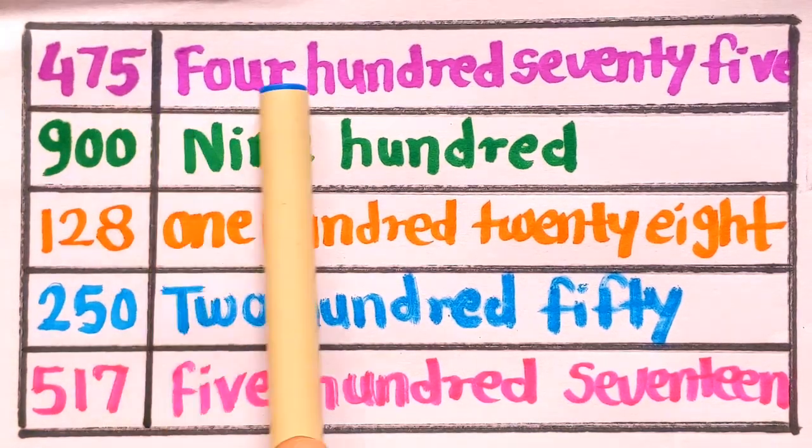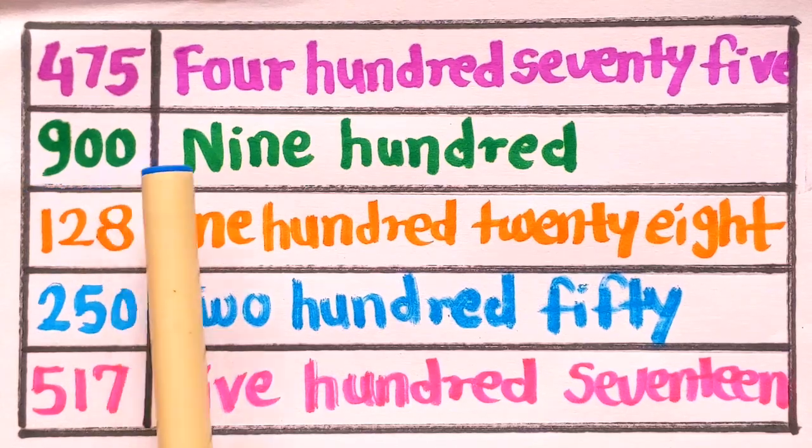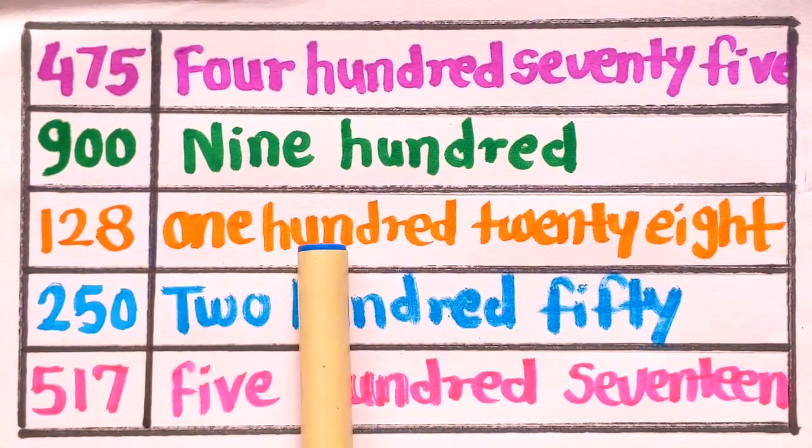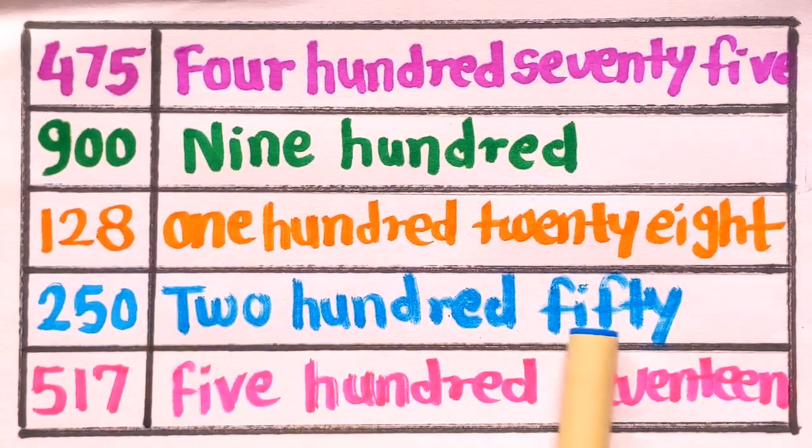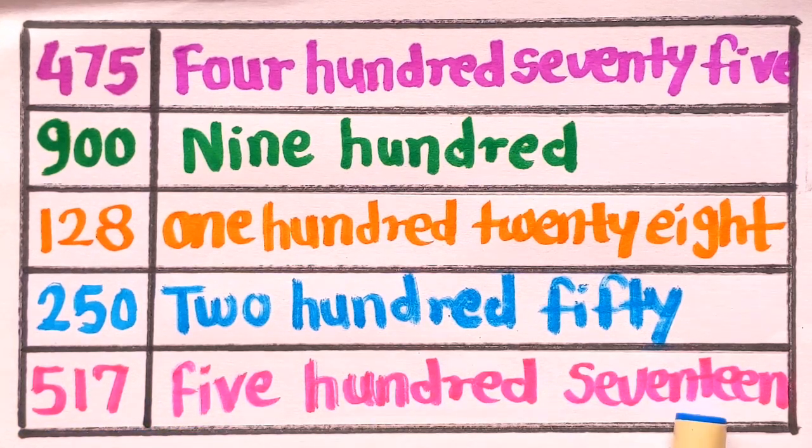475 is four hundred seventy five. 900 is nine hundred. 128 is one hundred twenty eight. 250 is two hundred fifty. And 517 is five hundred seventeen.